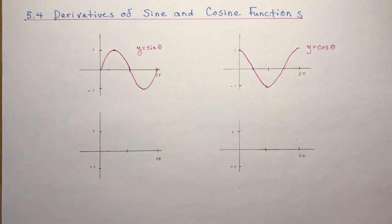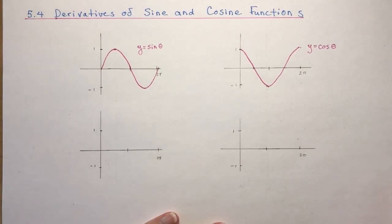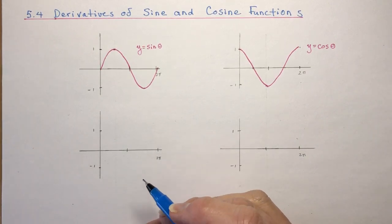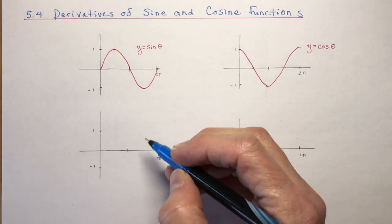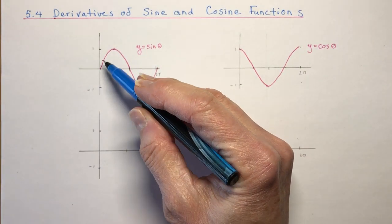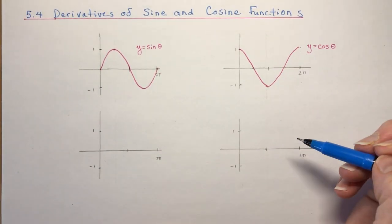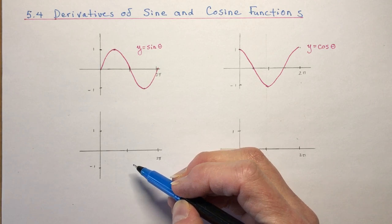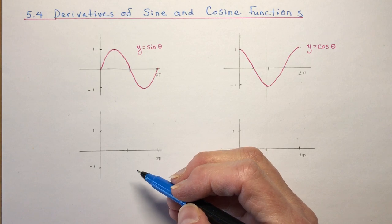5.4 - the derivatives of sine and cosine functions. This is one of my favorite lessons because I'm just a big fan of trigonometry. I hope you'll be really good at this by the time we finish. So let's take a look first at the original functions y equals sine theta and y equals cos theta, and we're going to draw the derivative functions right below, just like we did previously when we were sketching derivative functions.